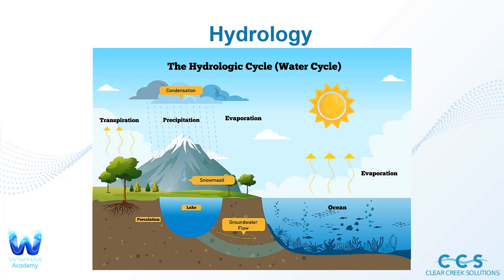Let's first break down what hydrology is. Hydrology is really going to be everything surrounding the study of the hydrologic cycle, or as many know it, the water cycle. When you first learn the water cycle in grade school, there's always a basic overview: it rains, the rain falls, it goes into the ocean, and then it's eventually evaporated. That's a very simplistic look at it, but it's still very true.